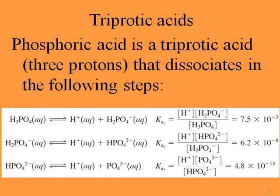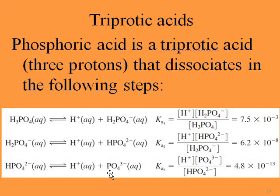Sometimes we have a triprotic acid, meaning three protons to lose. Phosphoric acid is the most common triprotic acid. It dissociates in three steps: H₃PO₄ loses one proton to give H₂PO₄⁻, which loses another to become HPO₄²⁻, and that loses the last proton to give the phosphate ion PO₄³⁻. We have three dissociation constants: KA1 > KA2 > KA3.